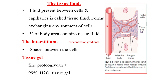The fluid present between the cells is called tissue fluid, and it forms the exchanging environment of the cells — nothing is exchanged between the cell and the capillary directly; rather, the cell is embedded in tissue fluid and exchanges nutrition and waste products there. Half of the body area contains this tissue fluid. The space between the cells is called the interstitium, and tissue gel is the fluid present in this space. It consists of fine proteoglycan fibers, with 99% of the water adsorbed onto these tissue proteoglycans as gel, and only 1% present as free water in the tissue spaces.